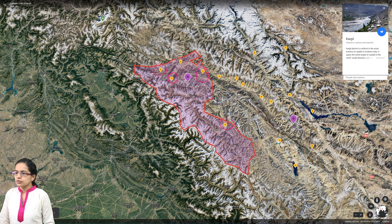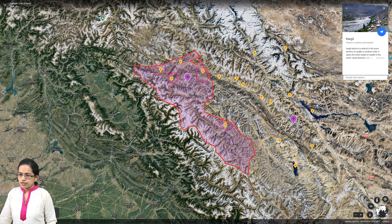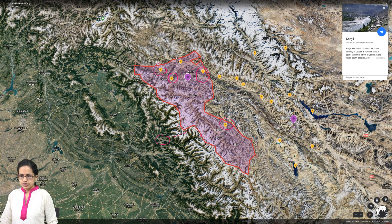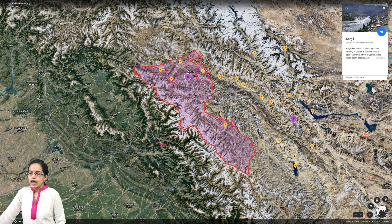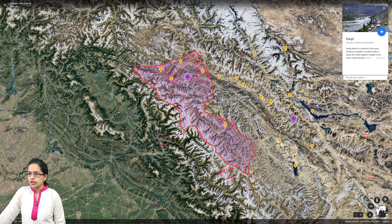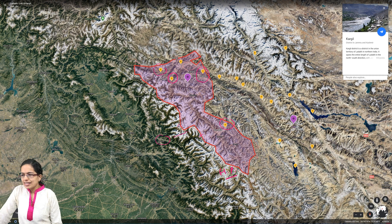Looking at the boundary of the Kargil district, it coincides with Jammu & Kashmir. You have Sonmarg, Gulmarg, and Baltal, which are part of the region closer to the Kishtavar mountain ranges. The Kishtavar district adjoins the part of Zanskar, and a main part of Zanskar connects to the region of Himachal Pradesh, which borders here.